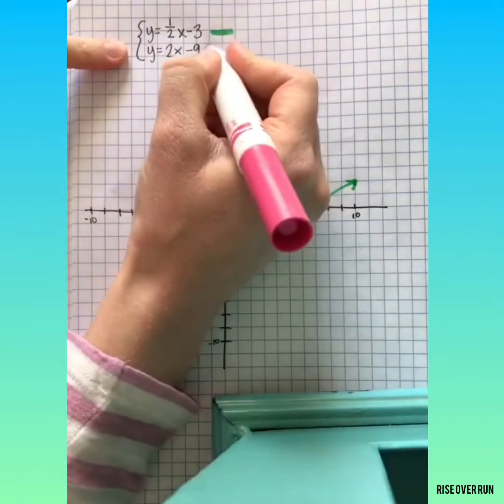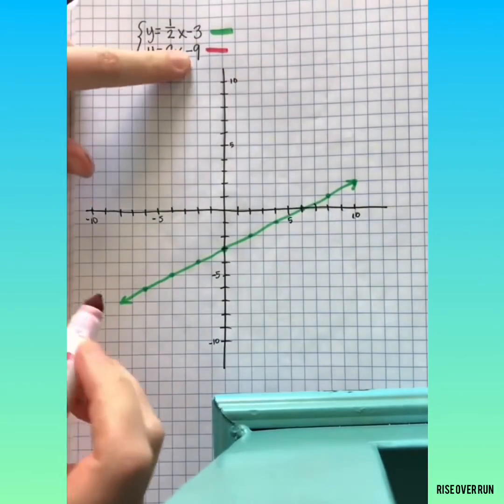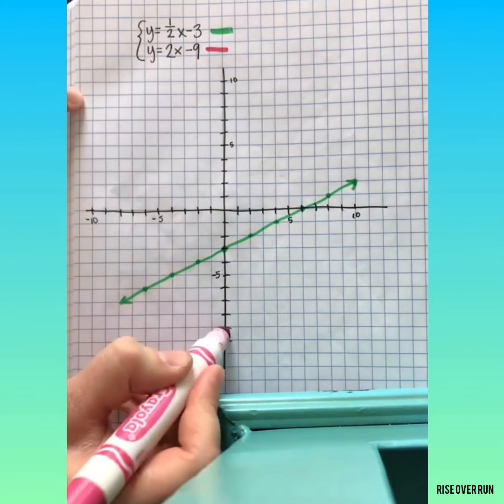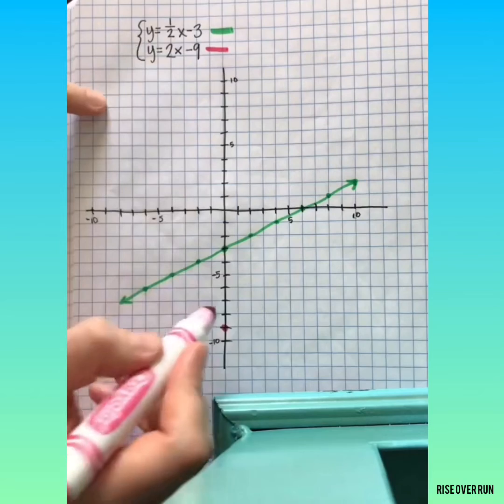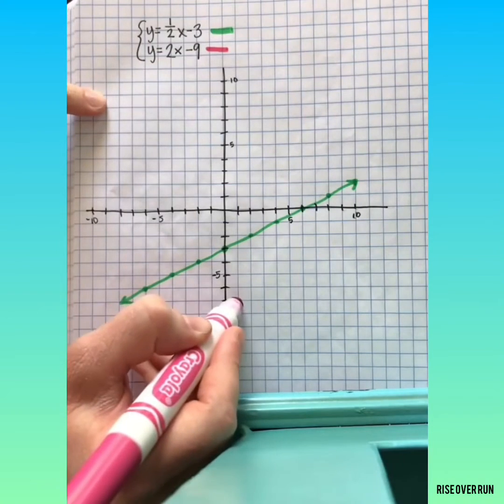Now, we'll graph the second equation in pink. It has a y-intercept of negative 9 and a slope of 2 or 2 over 1. So rise 2, run 1.